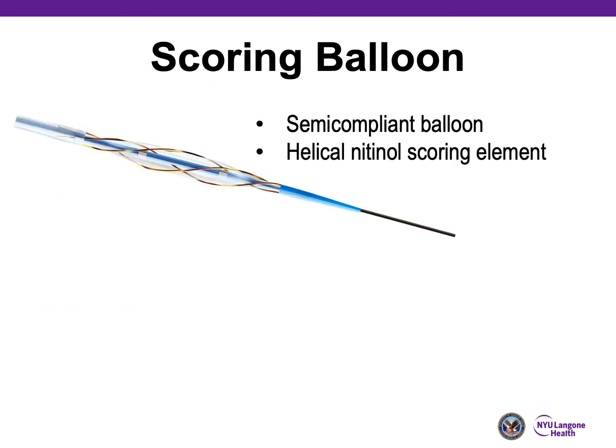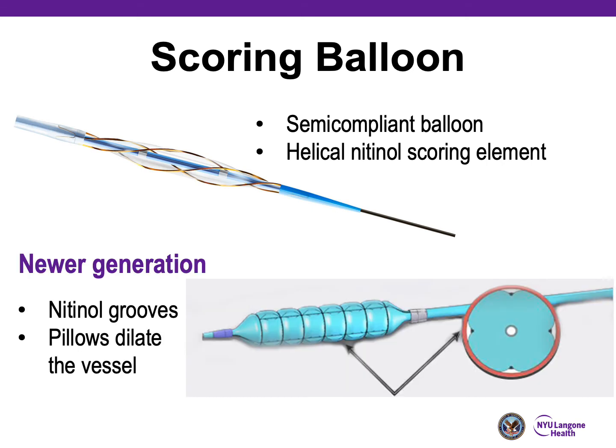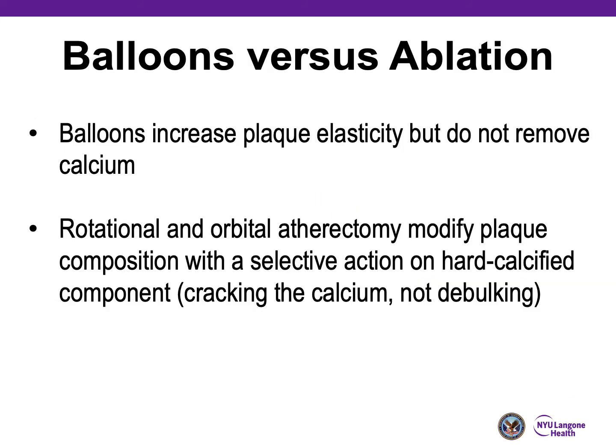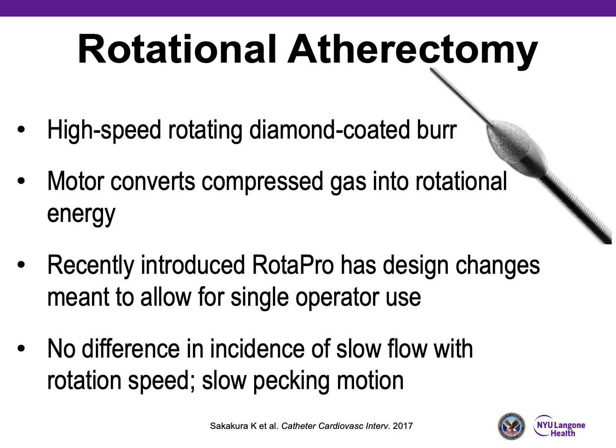There are also scoring balloons — semi-compliant balloons with a helical nitinol scoring element. Some newer generation scoring balloons have nitinol grooves allowing a pillow-like shape to dilate the vessel. Looking at balloons versus ablation: balloons increase plaque elasticity but do not remove calcium, while rotational and orbital atherectomy modify plaque composition with selective action on hard calcified components — they crack the calcium but do not necessarily debulk.